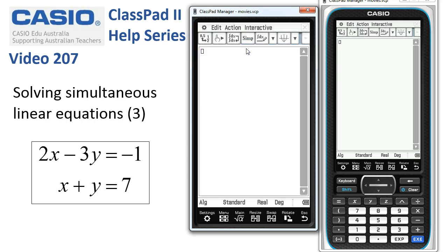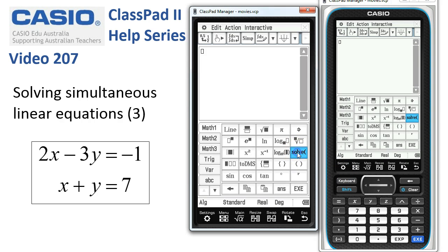The way we're going to set this up, I'm going to get the keyboard up, put in the word solve, and then two sets of curly brackets separated by a comma. So here's the comma and another set.